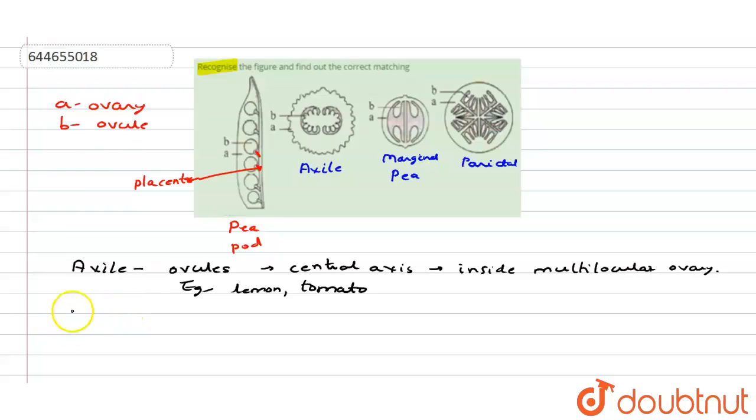Coming to next one, that is the marginal placentation. Here what happens? The placenta is forming a ridge along the ventral suture of the ovary, and the ovules are attached on the ridge to form two rows. An example is pea. So marginal placentation is found in pea.